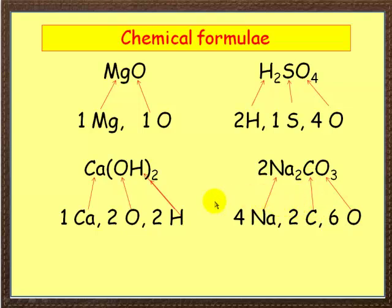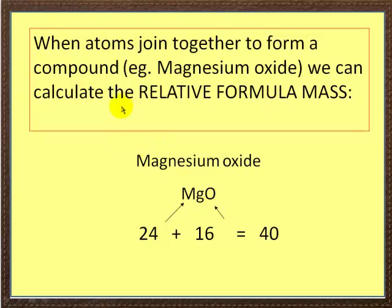Now these are really important because when you're working out the formula masses, you need to know these. So just to recap, when atoms join together to form a compound, we can calculate relative formula mass. And as we said before, magnesium oxide is MgO, 24 plus 16 equals 40. So hopefully now for any compound, you can work out the relative formula mass from the simple instructions I've put down here.